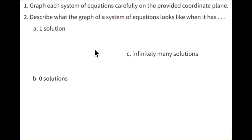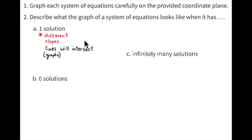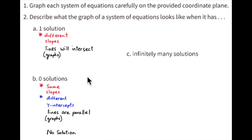When the system of equations has a single solution, that means the graphs have different slopes and those lines will intersect. When the system of equations has zero solutions, that means the graphs have the same slopes but different y-intercepts, so the graphs are parallel — they never intersect and there is never a solution to that system.